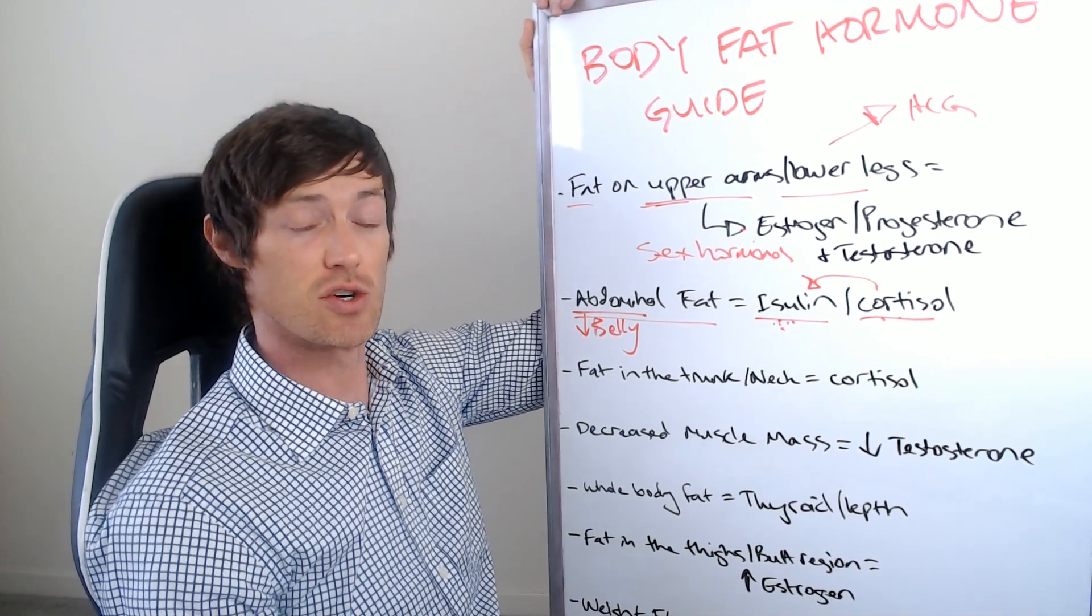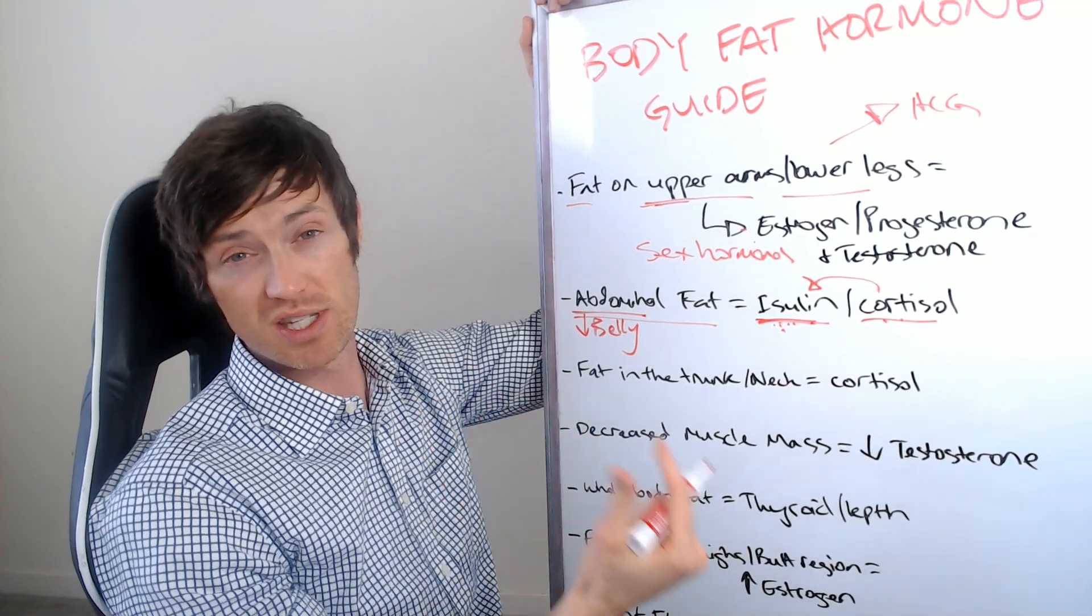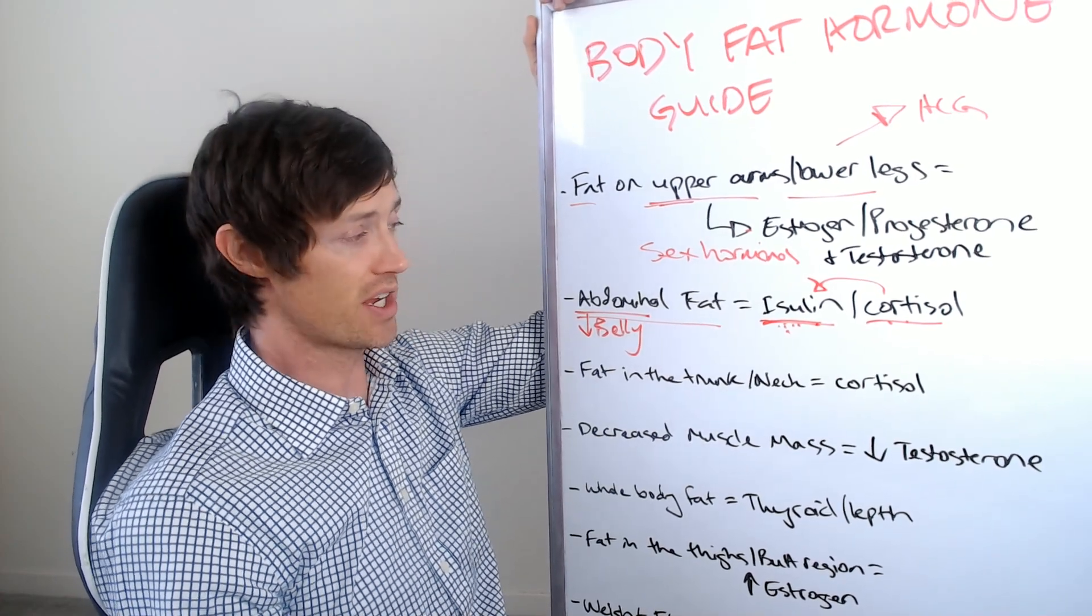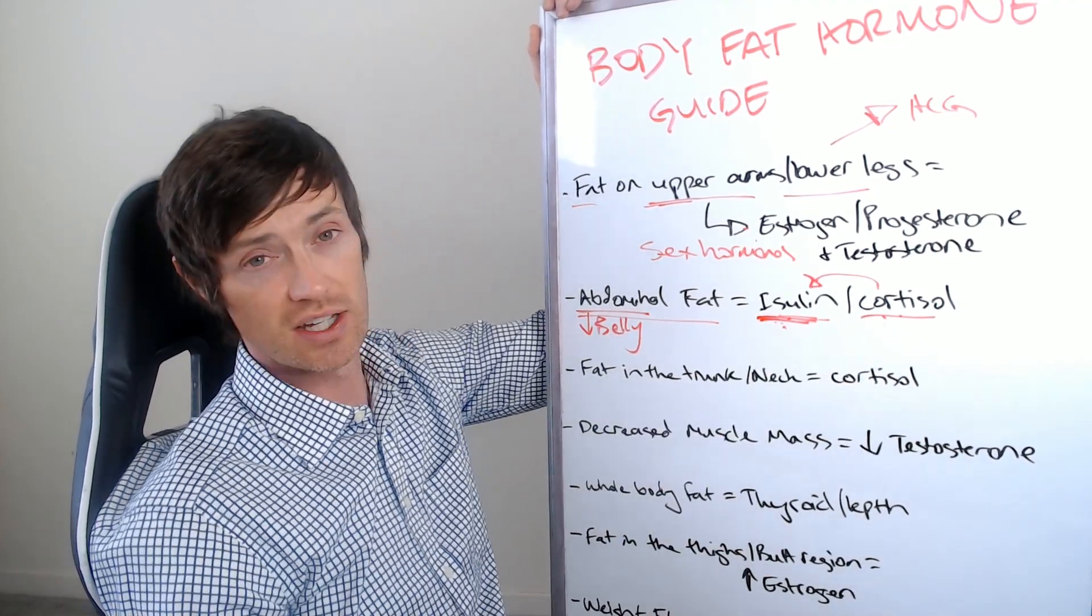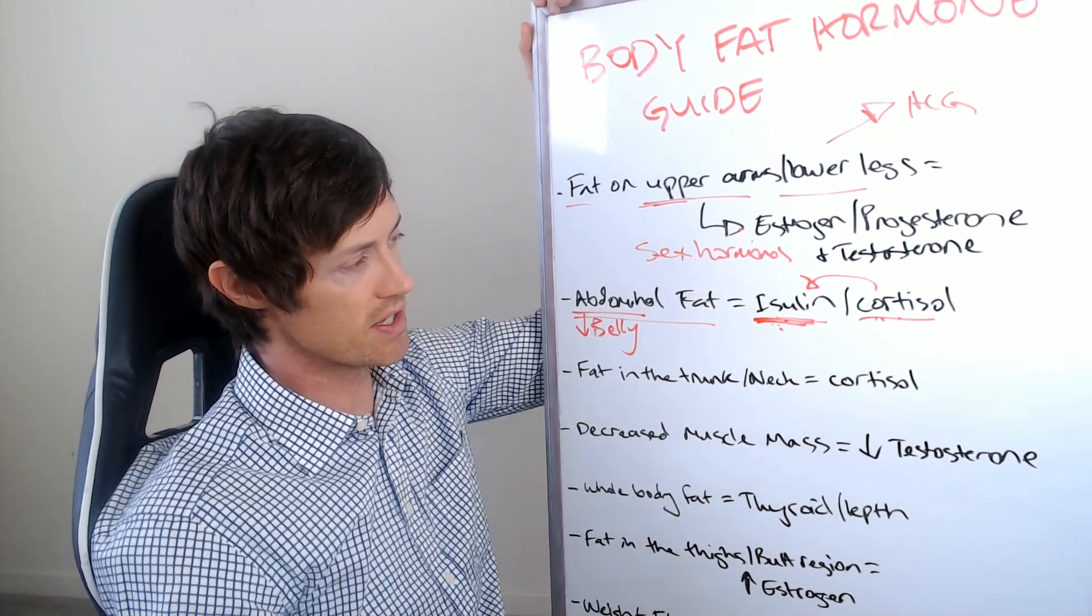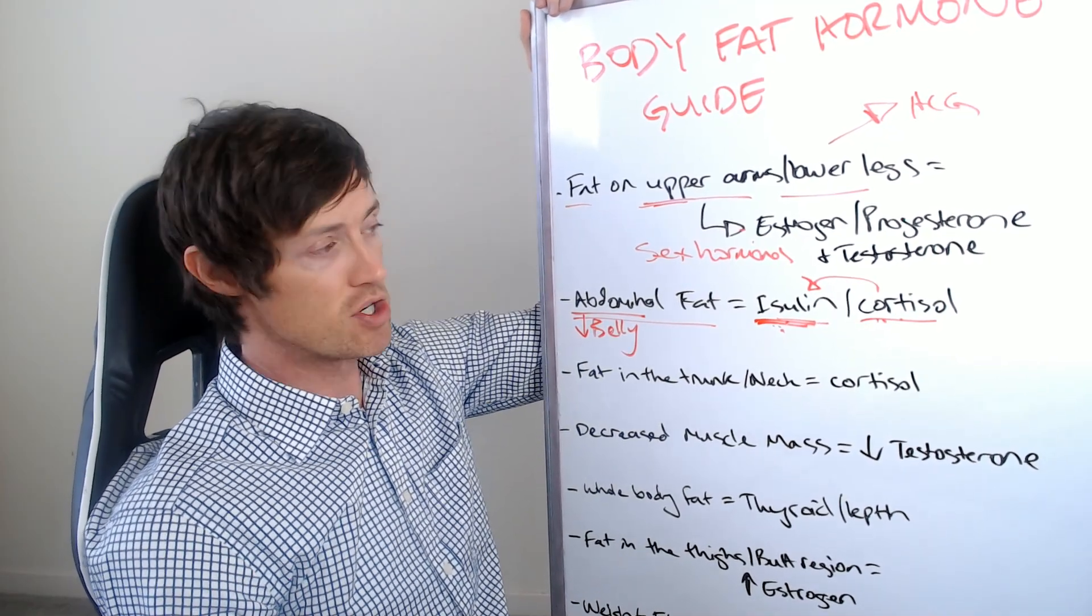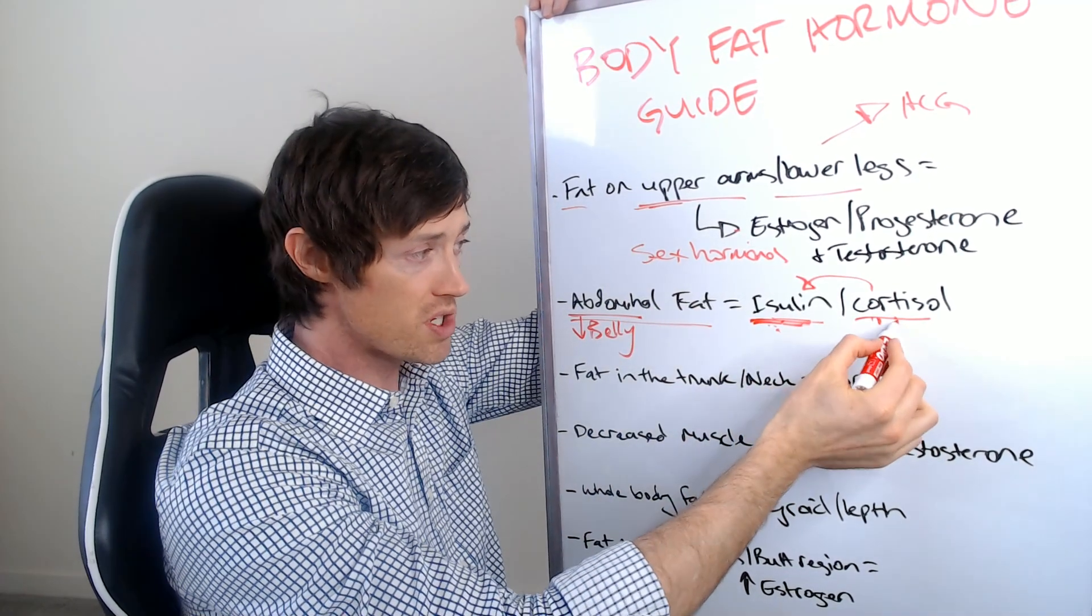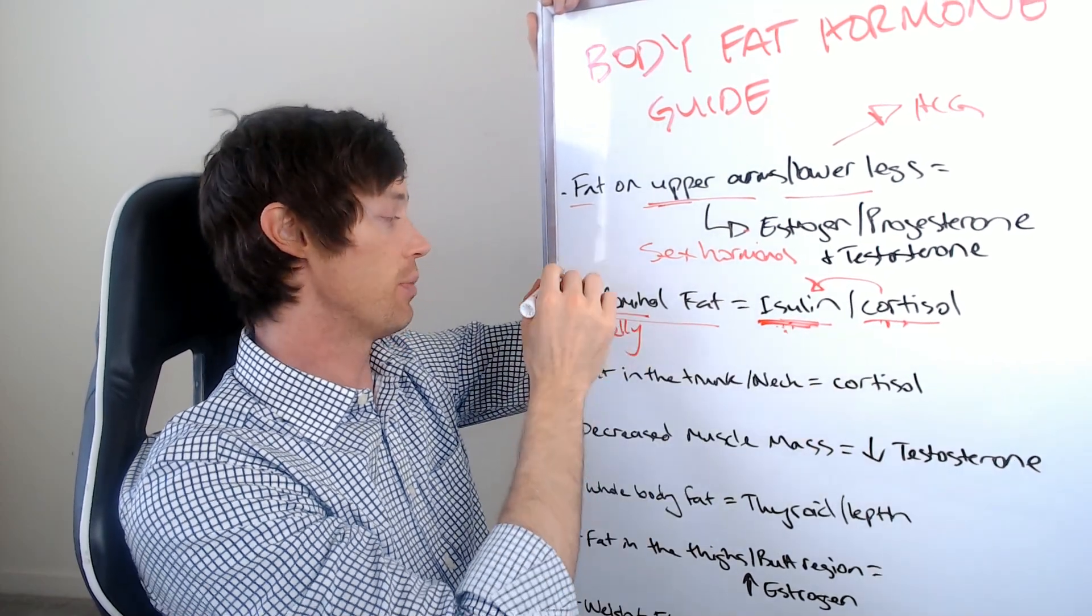The good news is all you have to do to treat those problems is treat the cortisol, treat the insulin and your belly fat should go away. You can treat cortisol problems using things like adrenal adaptogens and adrenal glandulars and insulin can be treated with diet. And it can also be treated with supplements such as berberine, glucomannan, alpha lipoic acid, chromium, etc.